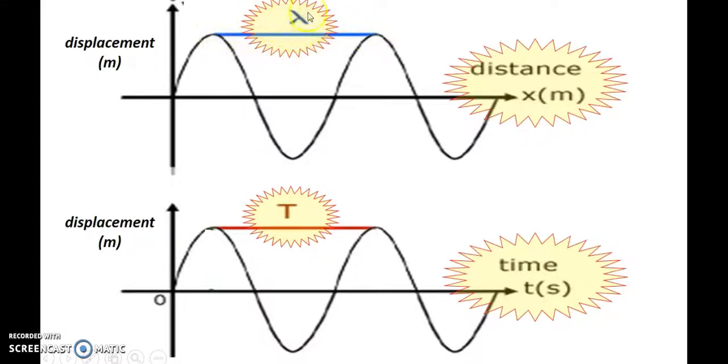Also known as from a crest to crest, is known as the wavelength. So the wavelength is denoted by this symbol here, called lambda. And over here is also a wavelength, but it's not the distance. This is the time taken for one wavelength. And the definition of that will be the period. So this one is wavelength in the displacement distance graph, whereas this part here is actually the period for a displacement time graph.